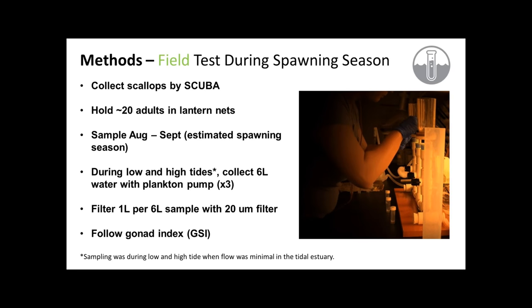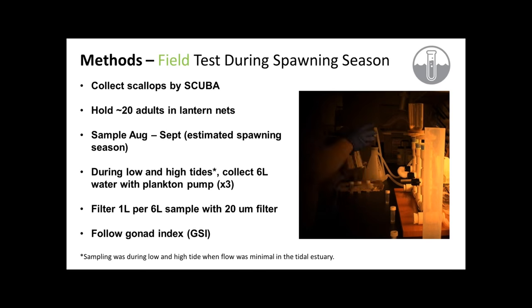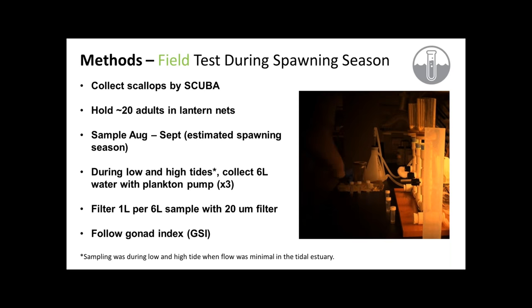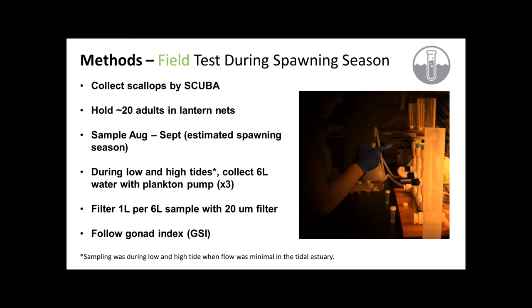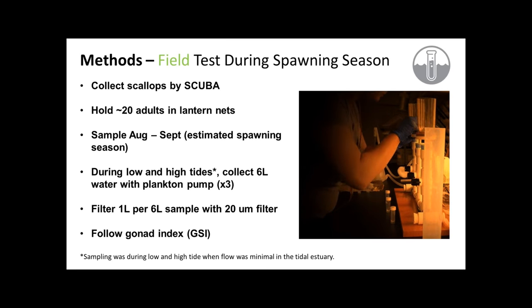For the field methods, we collected scallops by scuba, held some in a lantern net so we knew they weren't going anywhere, and did sampling during what we thought was the spawning season. We sampled only on low and high tides because we wanted the least amount of water movement possible. Then we filtered samples with a 20 micron filter because we were specifically looking for sperm — anything above 20 microns could be eggs, pseudo feces, or all sorts of things. Size fractionation is actually really important to target those sperm.